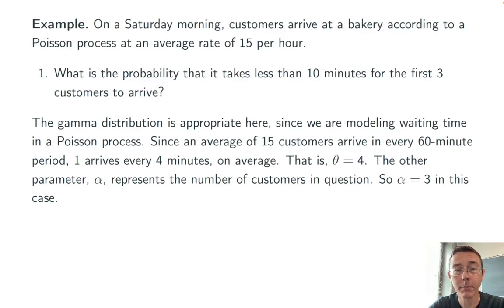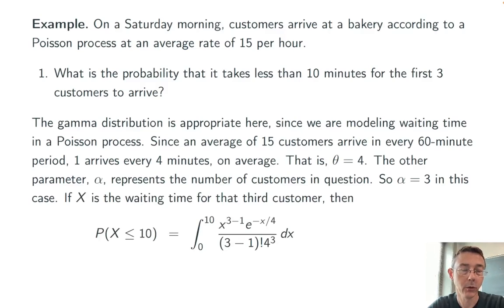Okay, so now that we've got both of our parameters, we have our probability density function. We can get our total probability here by doing an integral. So the probability that the total waiting time is less than or equal to 10 is the integral from 0 to 10 of that PDF. And here I've just taken the PDF of the gamma function, plugged in alpha equals 3, theta equals 4.